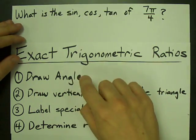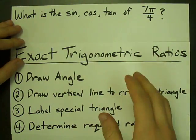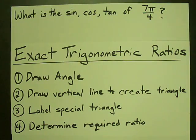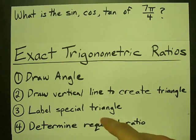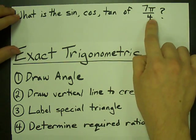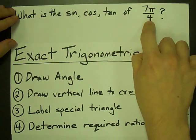The first thing you need to do is draw your angle, draw your vertical line so that you've created a special triangle. You need to label that special triangle, and then you need to actually determine the required ratio. Let's do that process for 7π over 4.